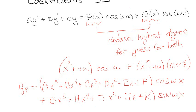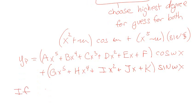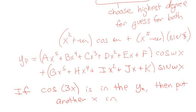So you get the idea that you choose the highest degree. Whichever one is highest has to dominate across both guesses. And also, if cosine of whatever you happen to have is in the homogeneous solution, then you have to put an x in. So after you would do all that, if the cosine of blah blah was in the homogeneous solution, then in front of all this you would put x and x, basically increasing the order by one.